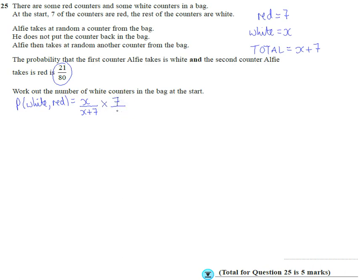The total is down by one because we picked this first white counter here. So it's going to be X plus not 7 but 6. And we're told this answer, we know this answer is equal to 21 over 80.